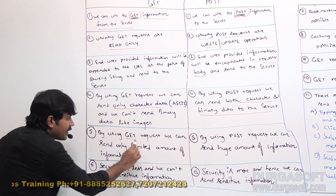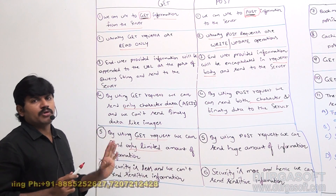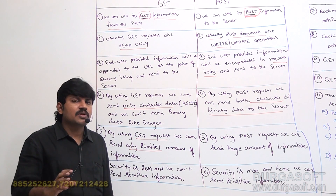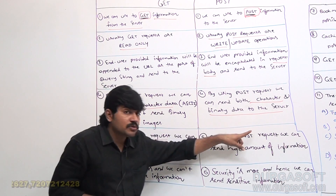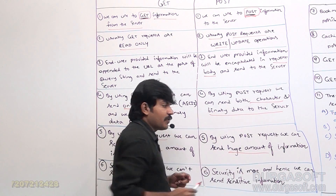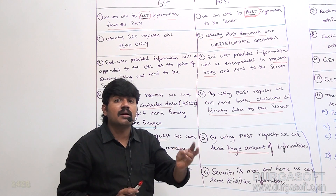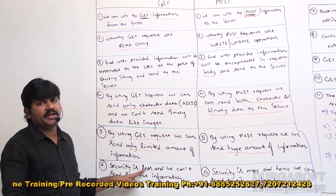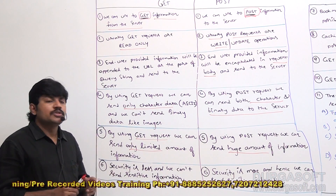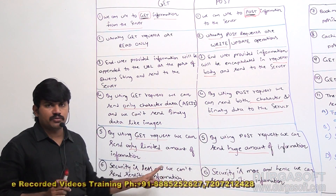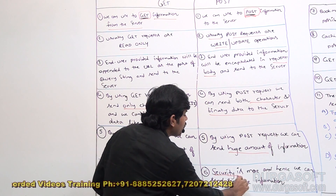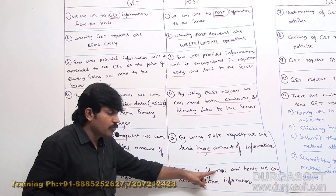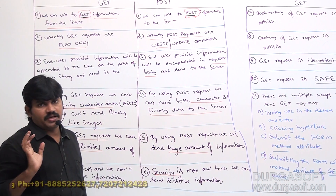Fifth difference: by using GET request, we can send only a limited amount of information — the maximum characters vary from browser to browser, but it is compulsory limited. But by using POST request, we can send a huge amount of information to the server, because there is no restriction on the length of the request body. Sixth difference: security is very less in GET request, because end user provided data is always visible in the URL — we can't send sensitive information. But in POST request, security is more, because end user information is not visible in the URL — happily, we can send sensitive information to the server.